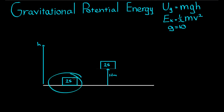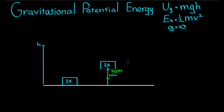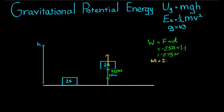The gravitational potential energy is given by MGH. We'll solve it the easy way first. While lifting it at a constant speed, the force of gravity was working against it — Mg = 25 × 10 = 250 N. The work done by gravity is equal to the force times the distance, so negative 250 times 1.1, which equals 275 J. So to get it to that height, we must have done work equal to gravity's work — the work done lifting was 275 J.